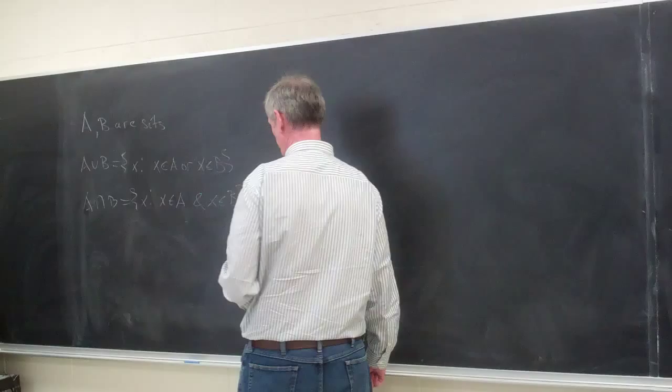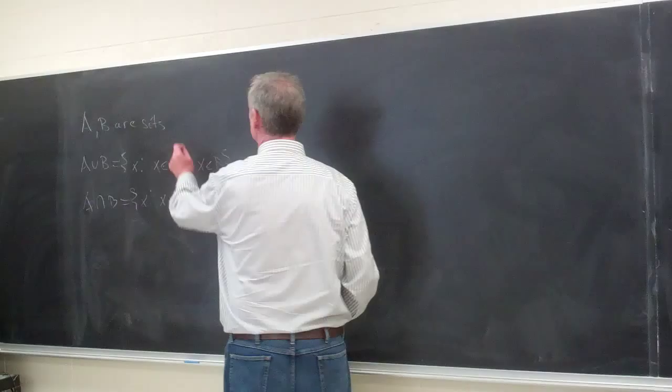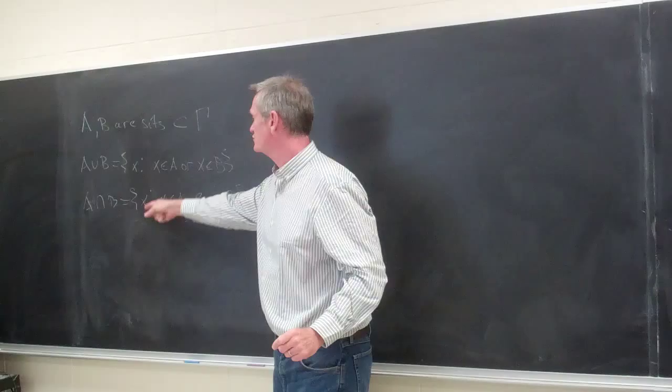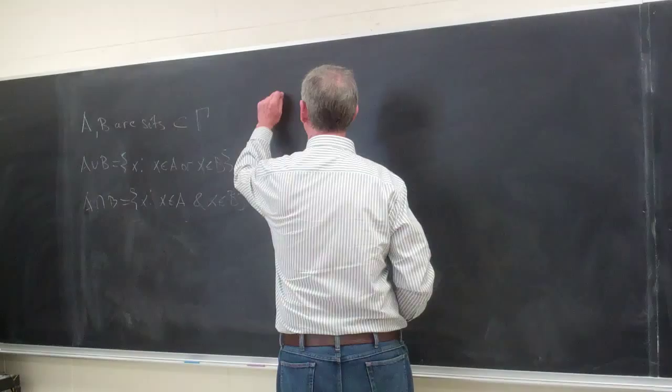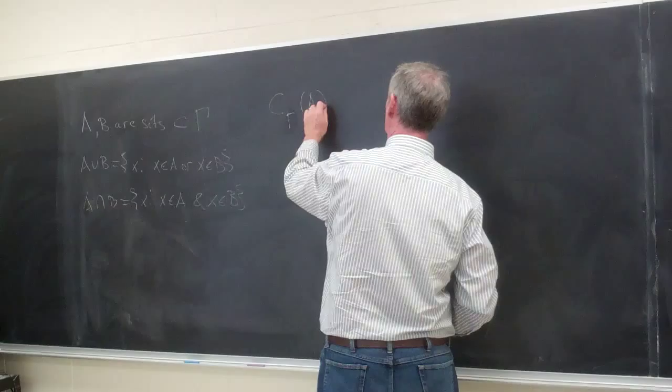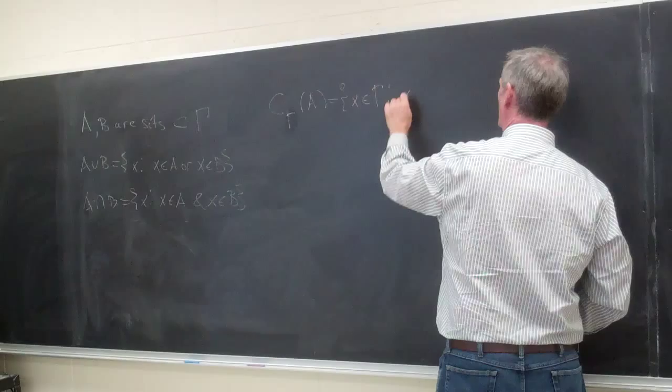If you're fussy about where these X's are, then we can always put the sets A and B inside some bigger set gamma and then just restrict X to lie within gamma. And in that case, the complement of A in gamma is going to be the set of all X in gamma such that X is not in A.